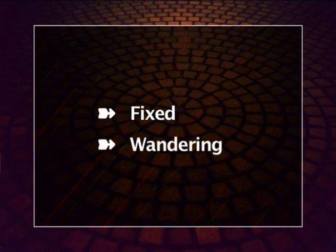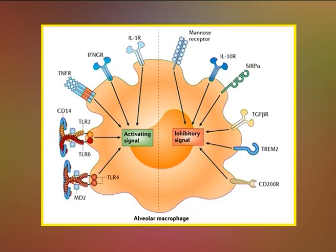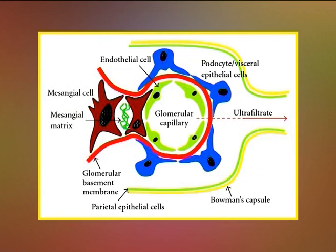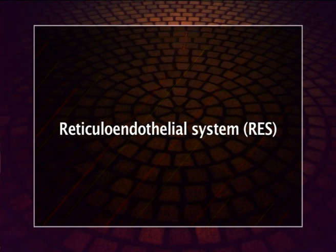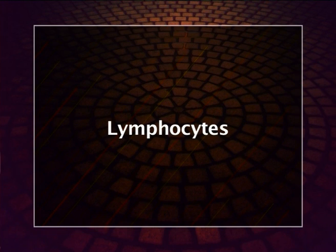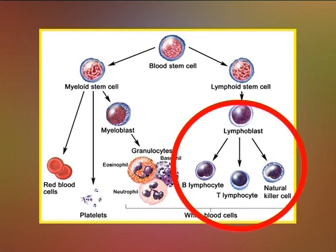Macrophages are of two types: fixed and wandering. Wandering macrophages occur in connective tissue throughout the body and move to the site of infection to dispose of microbes. Fixed macrophages are located permanently in certain organs — for example, lungs have alveolar macrophages, the liver has Kupffer cells, and renal glomeruli have mesangial cells. They trap microbes and dead cells carried in the blood and lymph and are retained in the spleen and lymph nodes. Together, wandering and fixed macrophages form the reticuloendothelial system.